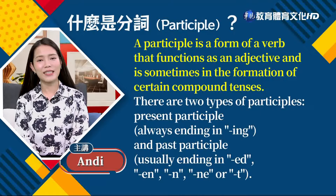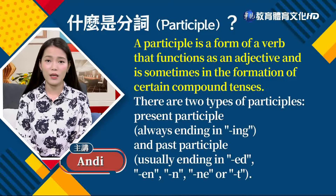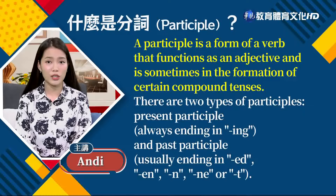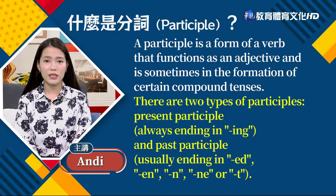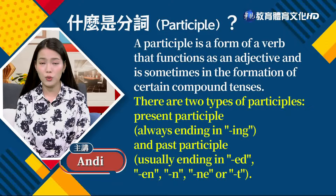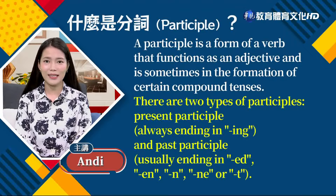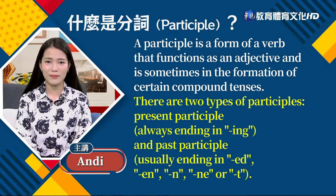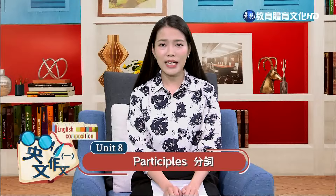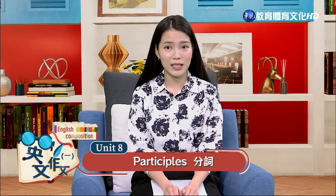分詞呢，它是動詞的一種形式，具有形容詞的功能，有時候也是時態的一部分。分詞分為兩種：現在分詞，也就是以-ing做結尾；以及過去分詞，通常是以-ed、-en、-n、-ne或-t做結尾。接著我們就先來看一下什麼是現在分詞。